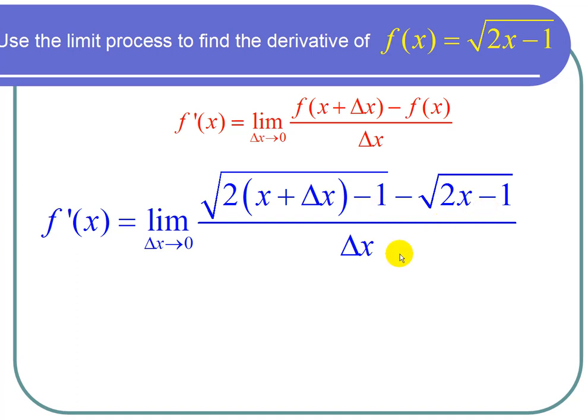So now that I have a limit that involves roots, I simplify that by multiplying top and bottom by the conjugate root. Remember the conjugate root means that we put a plus sign where we saw a minus sign.